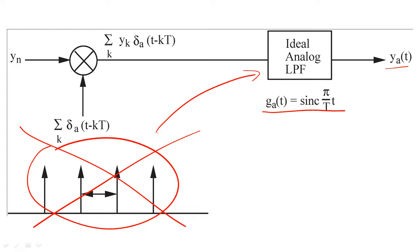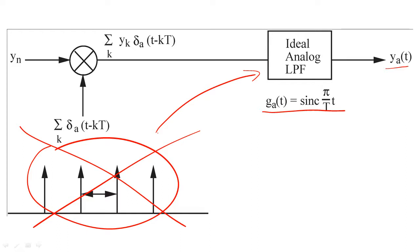Therefore, we typically use a different system that is easier to implement. This system is called the zero-order hold. The zero-order hold system simply filters y of n with the filter p sub a, to create a stepwise approximation of y sub a.